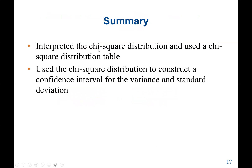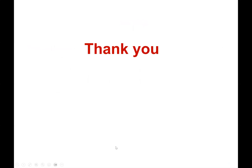In summary, in these lectures we interpreted the chi-square distribution and learned how to use the chi-square distribution table using two items: the alpha value, which determines the column, and the degrees of freedom, which determines the row. The intersection gives the critical value. We also used the chi-square distribution to construct confidence intervals for both the variance and standard deviation. Thank you.